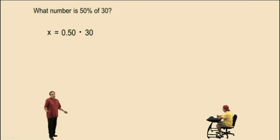And there's our equation. So all you have to do is multiply 0.50 times 30, and you get 15. And so what number is 50% of 30? It's 15. There's the equation, and we solve it to prove it.